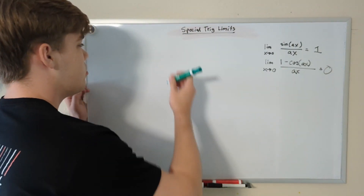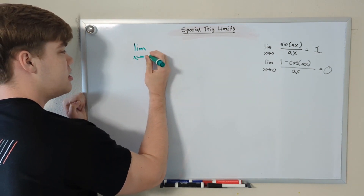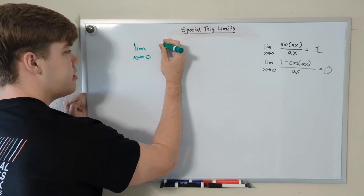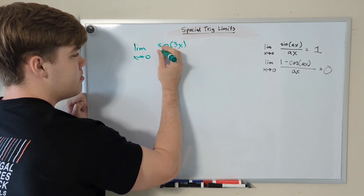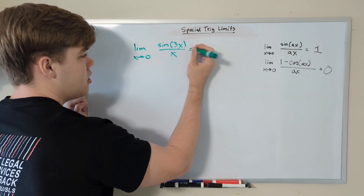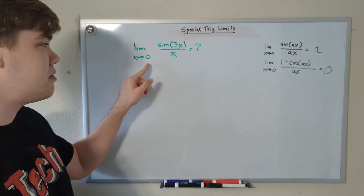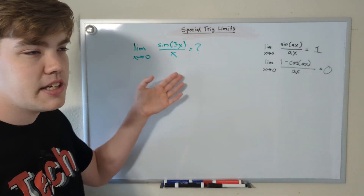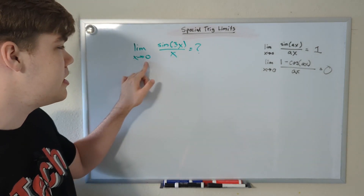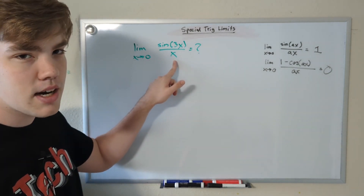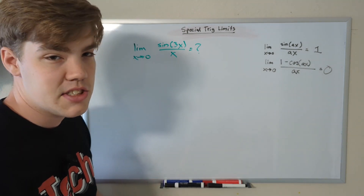The example we're gonna start with is the limit as x approaches zero of sine(3x) divided by x. What is this limit? First, notice that x is approaching zero, which means we cannot just substitute in x to solve this problem. If we were to just substitute in x, we would get zero on the bottom, and we cannot divide by zero. So we're gonna have to use a different strategy.